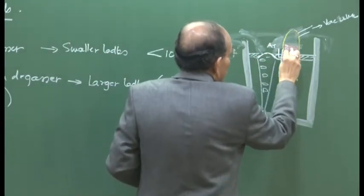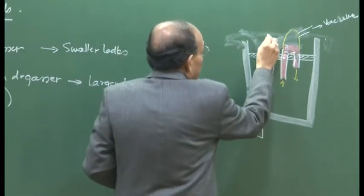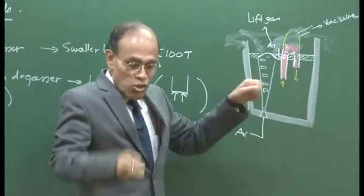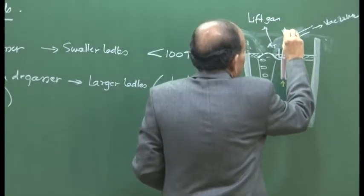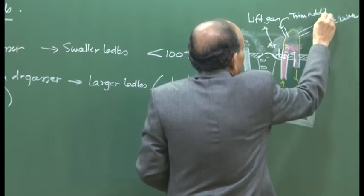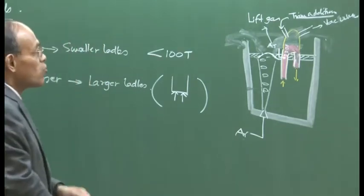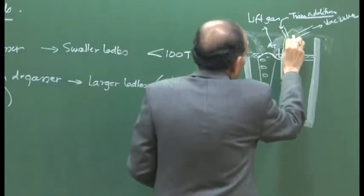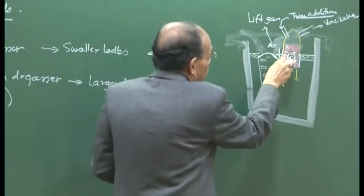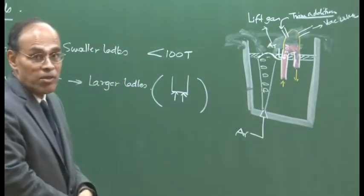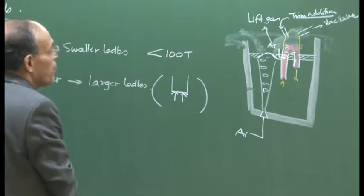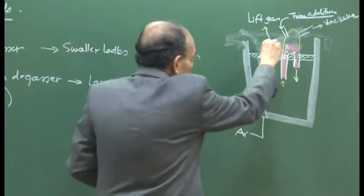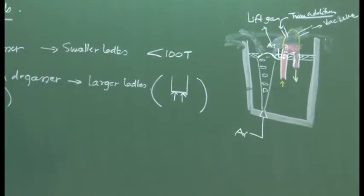There is no slag coverage inside the snorkel vessel, so intense degassing takes place due to the vacuum interaction. This argon gas is called the lift gas. The structure is called the snorkel, and inside it there is also an arrangement for making trim additions. Continuously the vacuum environment sucks out gases, creating a low pressure region, while the lift gas ensures fresh metal is always exposed to vacuum — creating a highly efficient degassing system. The molten metal enters through one leg and exits through the other, creating a circulatory loop — hence the name circulation degassing system.